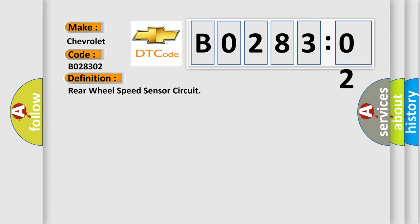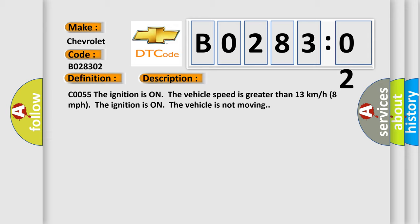And now this is a short description of this DTC code. CO055: the ignition is on, the vehicle speed is greater than 13 kilometers per hour or 8 miles per hour. The ignition is on, the vehicle is not moving.